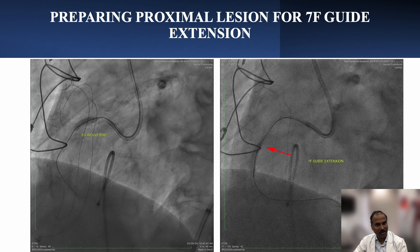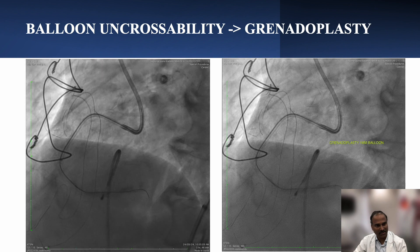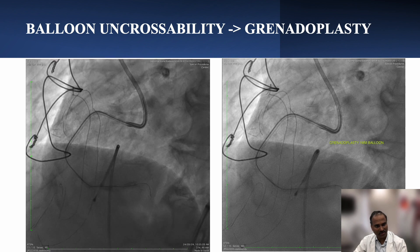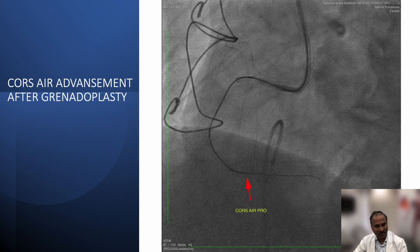We also prepared the proximal lesion further with a 3.5 mm balloon to make room for the guide extension, so we could advance balloons across the tough lesion and distal lesion. Despite guide extension and Amplatz guide, we were not able to push the Corsair catheter across the distal lesion, so we tried grenoplasty. You can see this 1 mm balloon ruptured at 20 to 24 atmospheres with contrast extravasation into the tissues. Post-grenoplasty, we could advance Corsair just beyond the lesion.